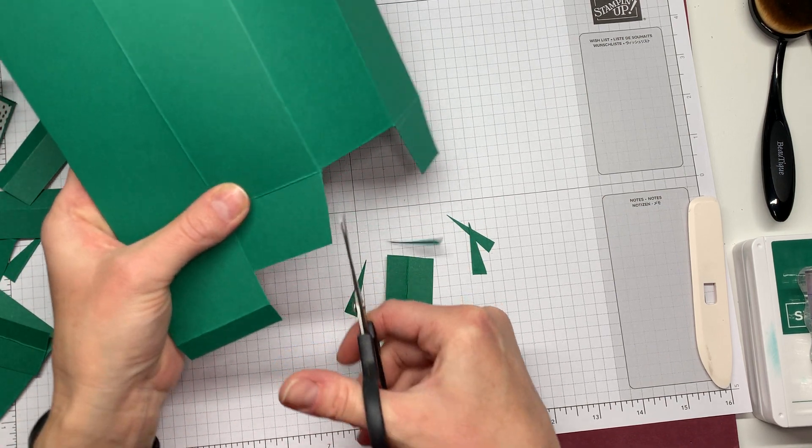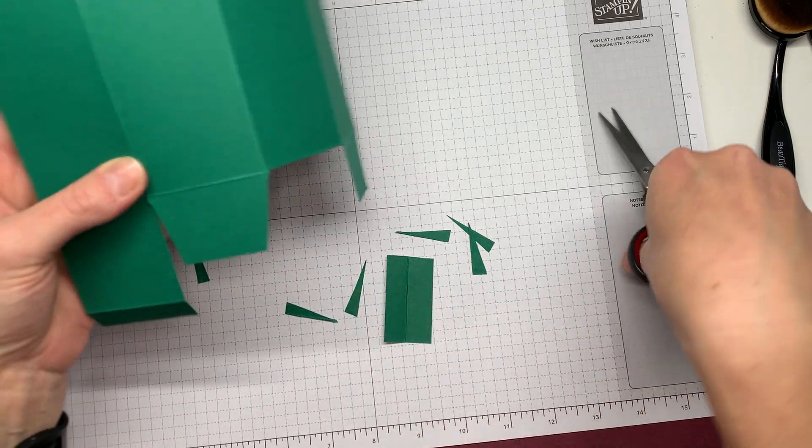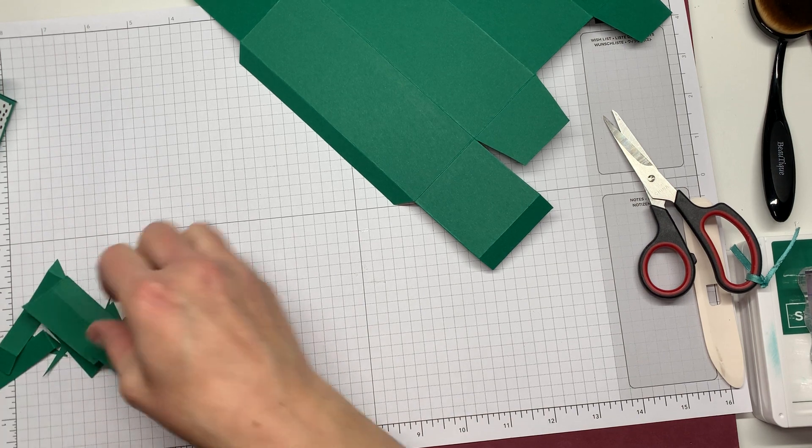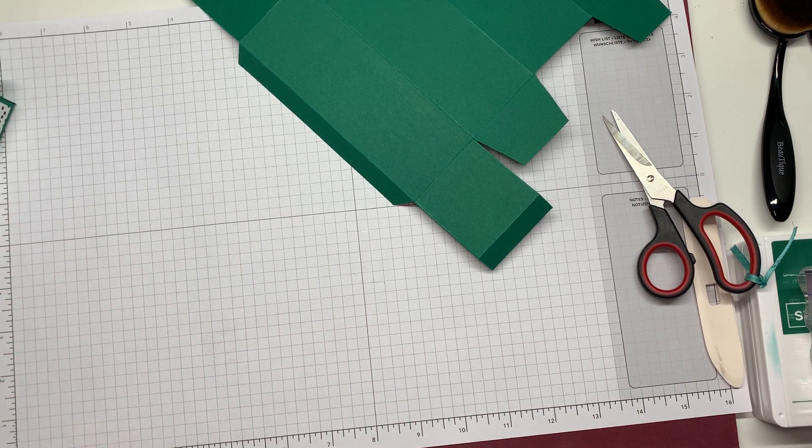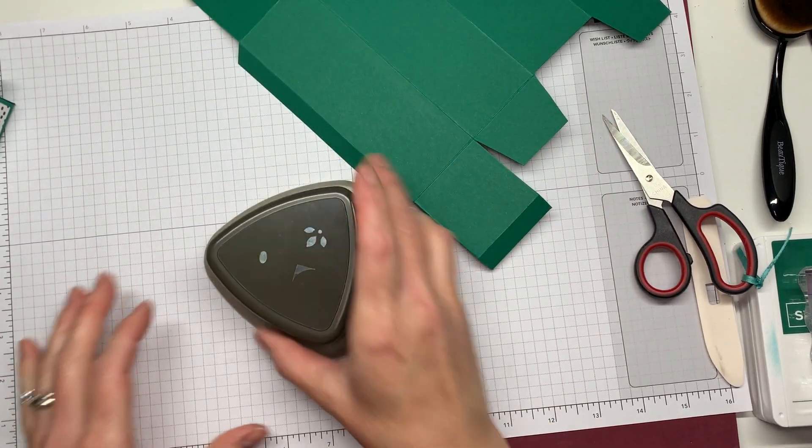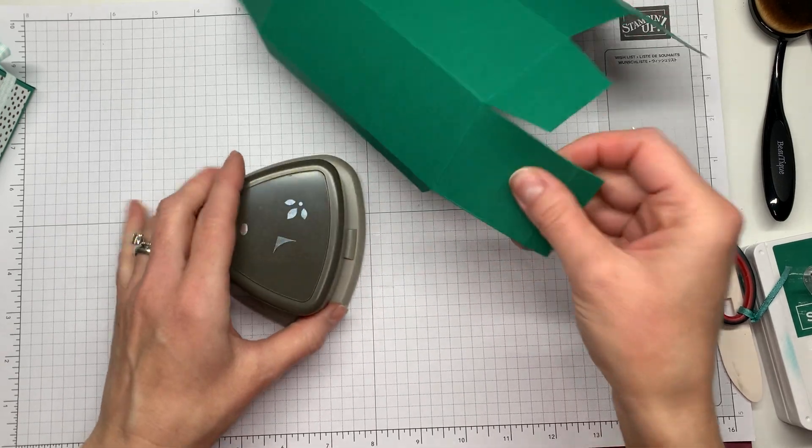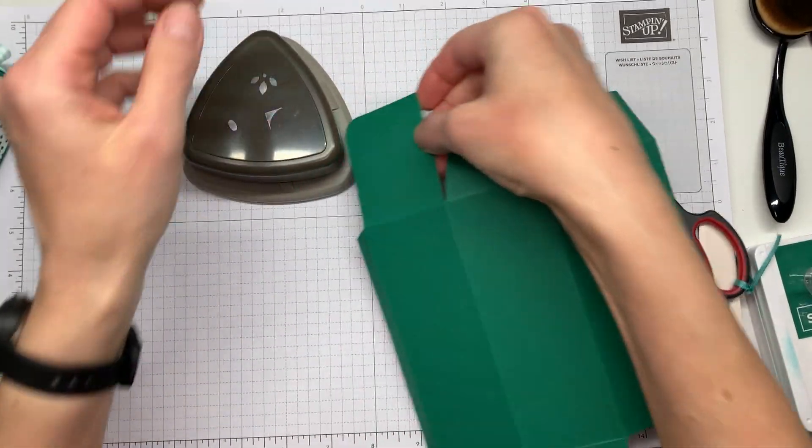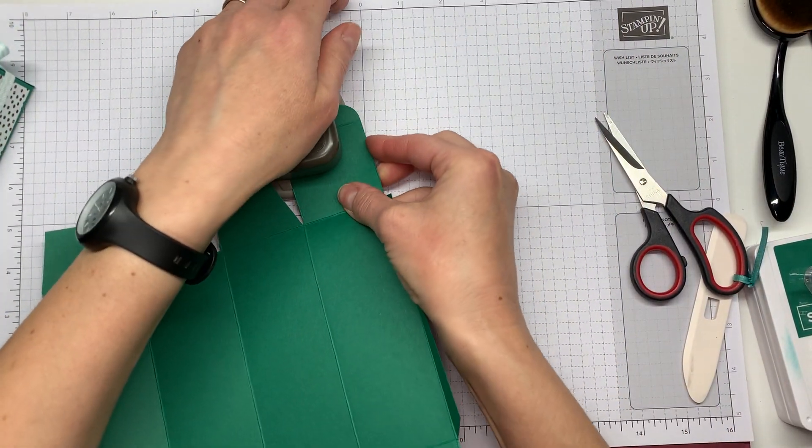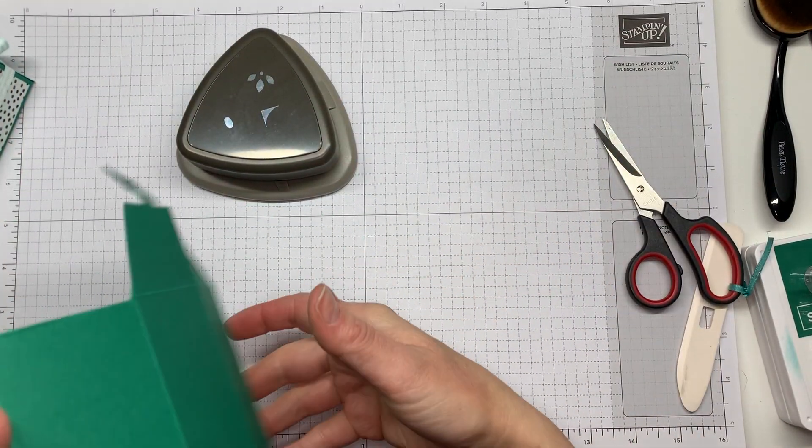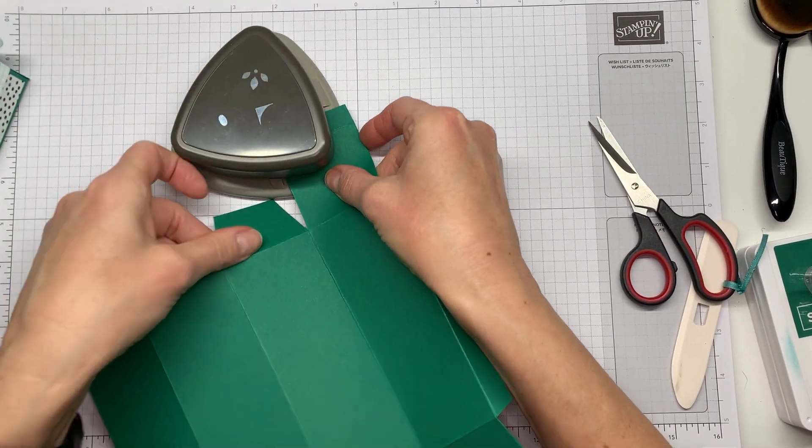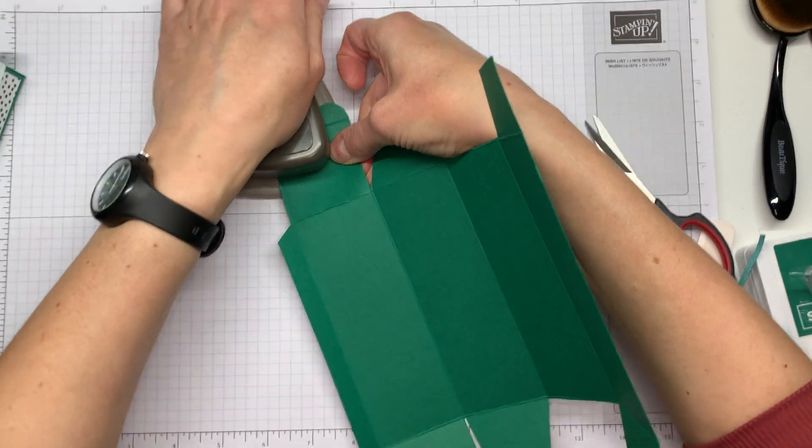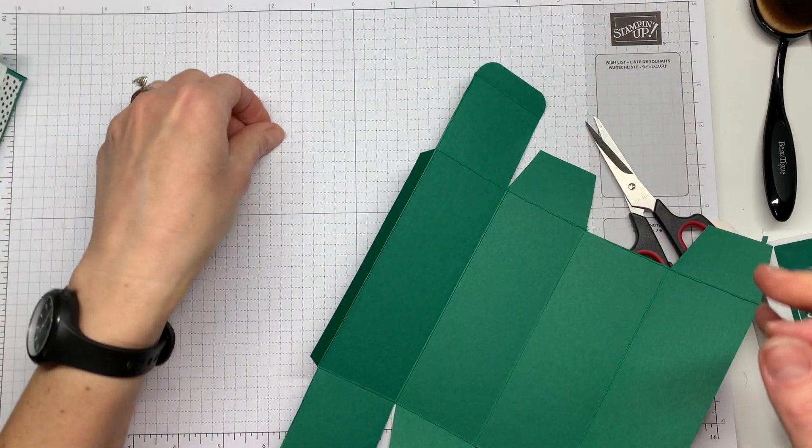And the next thing that we'll do is get our detailed trio punch out. That punch is just really nice for rounding these corners of the closure flap. So you're going to take this flap that's still full size and just round these corners. Then we'll do it to the other end. You just want to fold those other flaps out of the way so that you can get all the way into this punch.